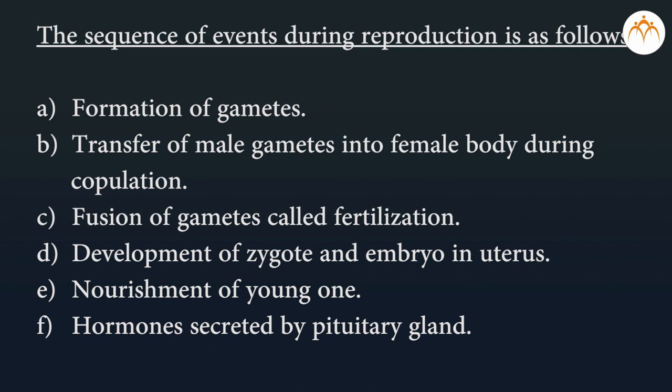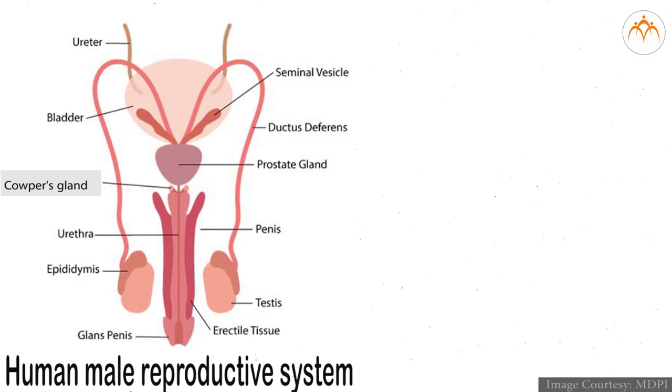The sequence of events during reproduction is as follows: formation of gametes; transfer of male gametes into the female body during copulation; fusion of gametes called fertilization; development of zygote and embryo in the uterus; nourishment of the young one; and hormones secreted by the pituitary gland.